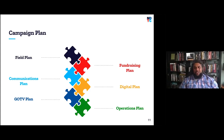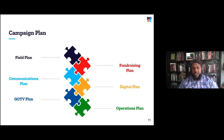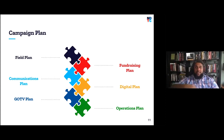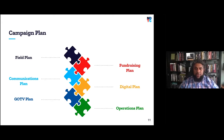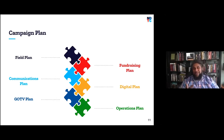Your field plan has your win number and all the tactics and timelines you plan to use to reach it. Your fundraising plan covers how much money you want to raise, how you plan to raise it, and the individual donors you hope to ask. Your communications plan covers your press strategy, mail, and messaging. Your digital plan covers social media. Your GOTV plan covers that final stage of turning out supporters, and your operations plan covers staff. And your operations plan is something you'll want to think through before you hire someone.